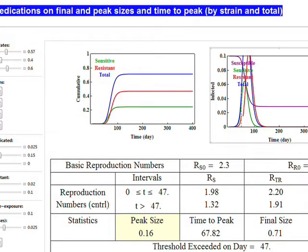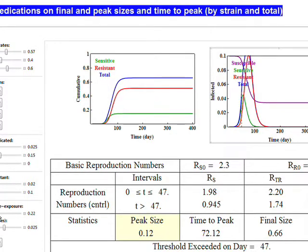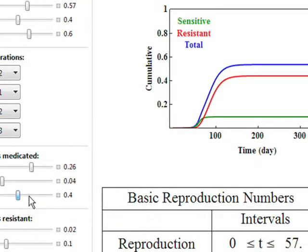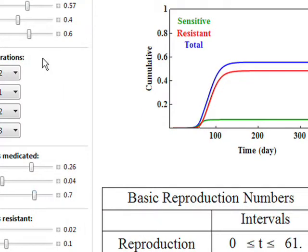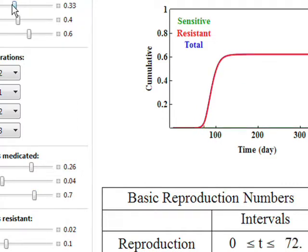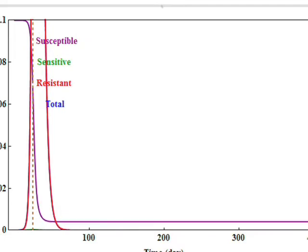This is an example of a mathematical model and a notebook created using Mathematica. This graph shows what will happen to a pandemic of influenza if certain medication strategies are used. The left graph shows the cumulative cases, the total number of people infected over the course of the epidemic. And the graph on the right shows the actual epidemic curves.